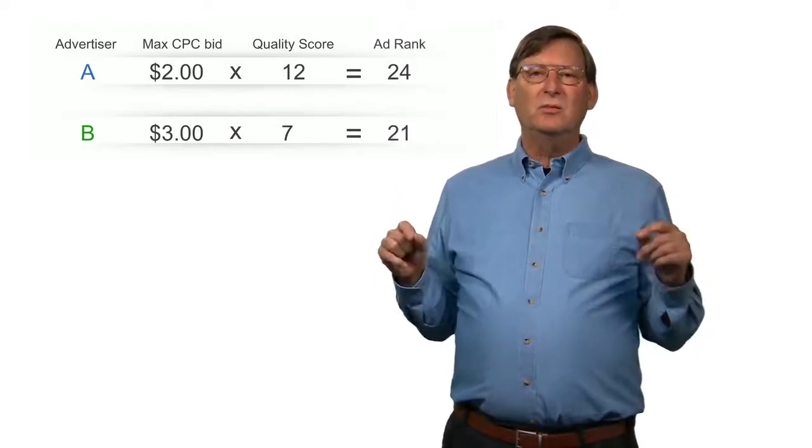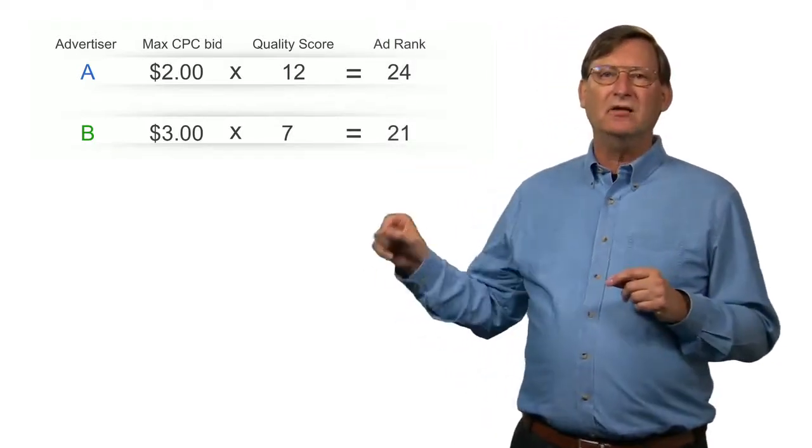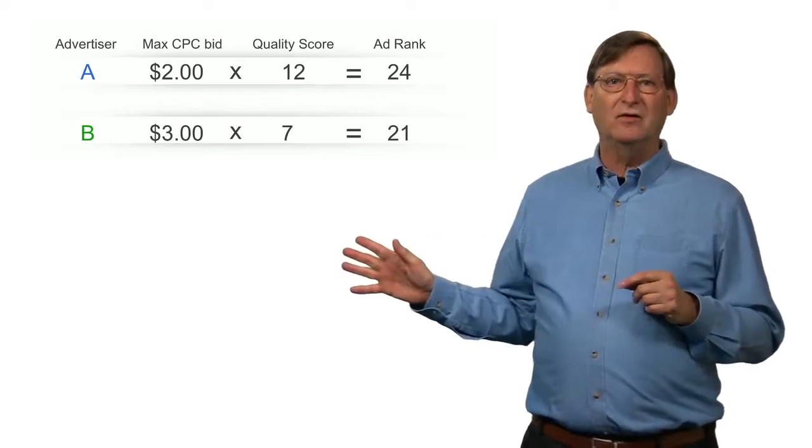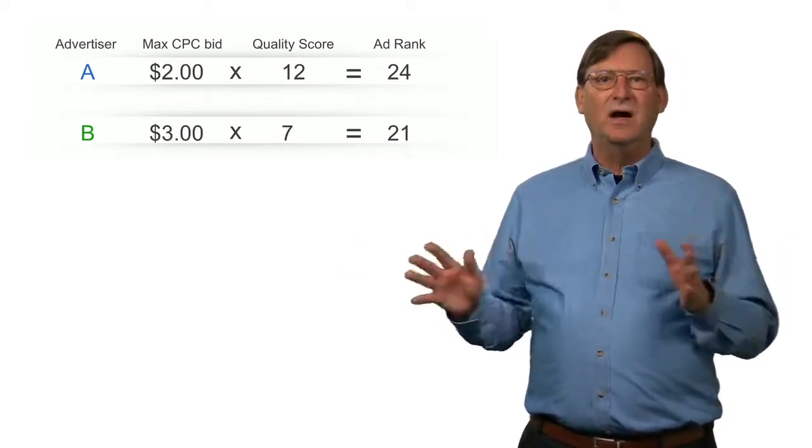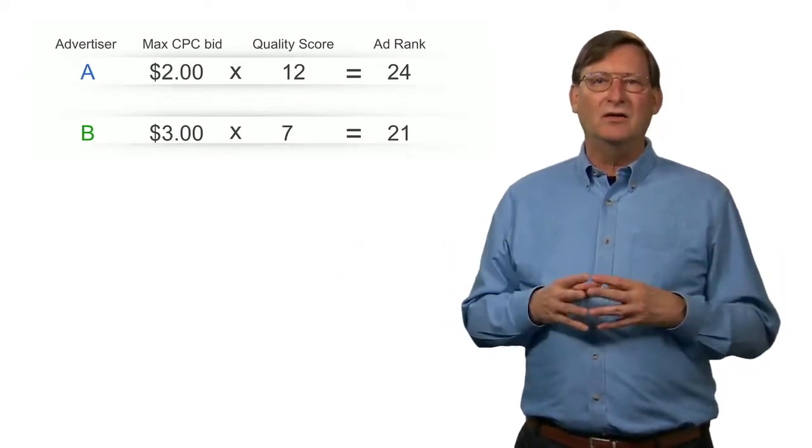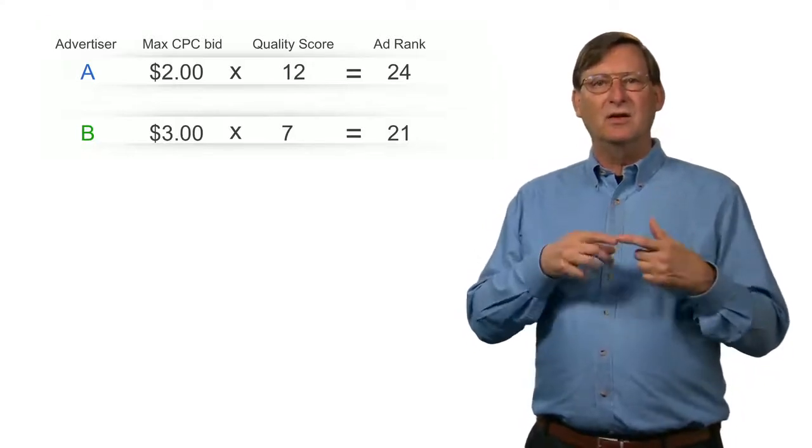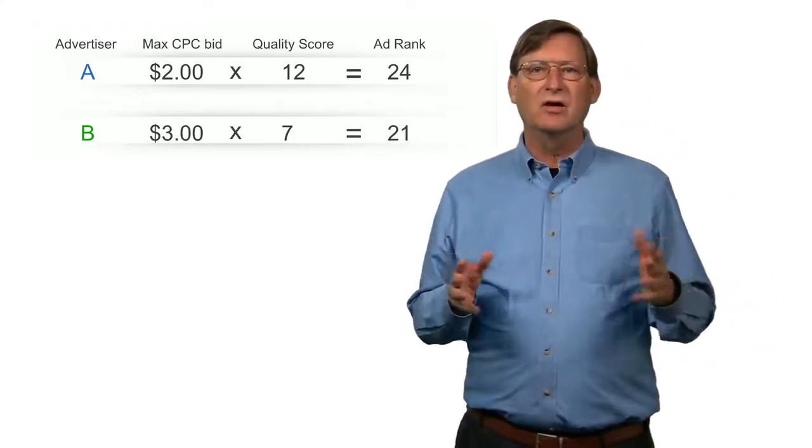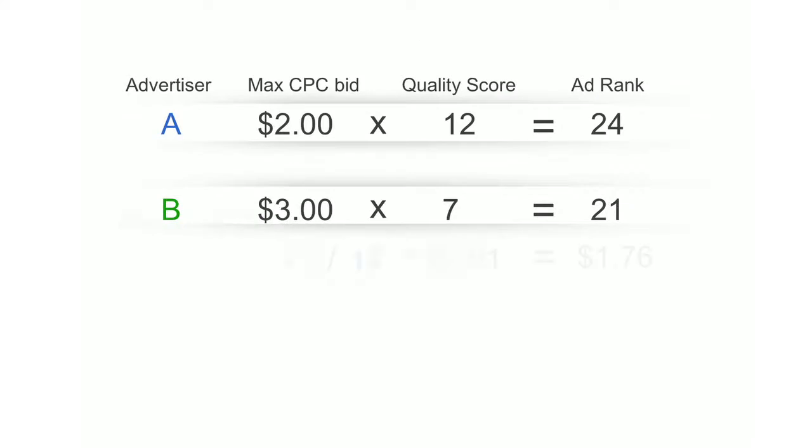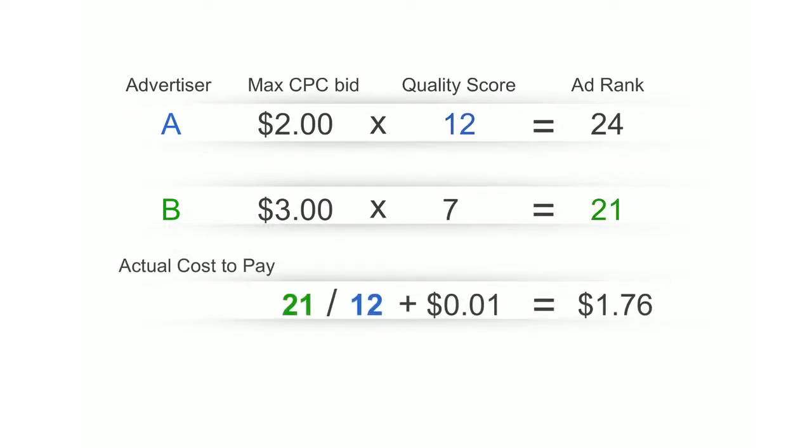But to determine the price that advertiser A will pay, we take the next highest ad rank, that's advertiser B's ad rank, and divide through by the quality score of advertiser A, and round up to the nearest minimal currency unit in the advertiser's country. So here, we'll assume the advertisers are located in the U.S., so we'll just add a cent.